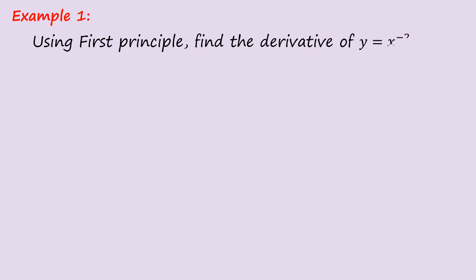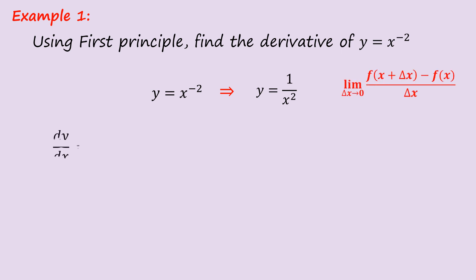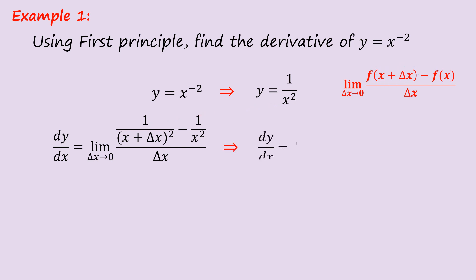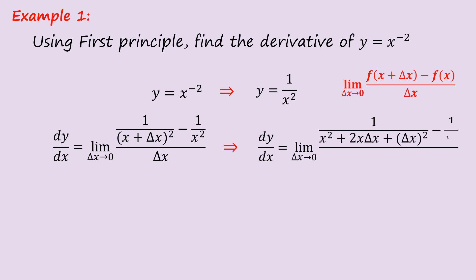Example 1: Using first principle, find the derivative of y = x^(−2), which can be written as 1/x². Using the limit formula, dy/dx equals the limit as Δx → 0 of [1/(x + Δx)² − 1/x²] / Δx. We got this by substituting 1/x² into the limit formula, so we have 1/(x + Δx)².